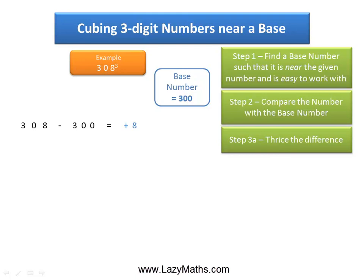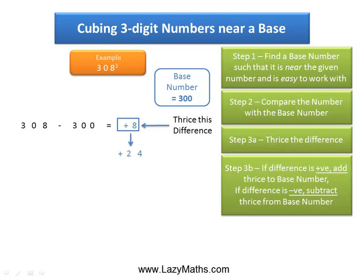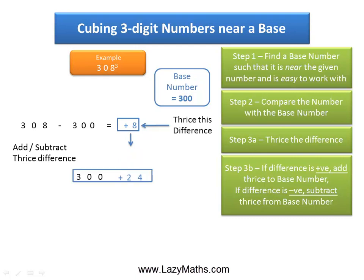The next step is to find three times the difference: 3 times positive 8 is positive 24. Then add the base number and three times the difference: 300 plus 24 gives us 324.